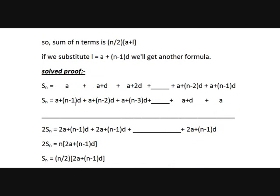Now let's take a solid proof. Let Sn be the sum of first n terms in the arithmetic progression. Sn equals a plus a plus d plus a plus 2d plus and so on until a plus n minus 2 times d plus a plus n minus 1 times d. Now if we write the reverse, it becomes Sn equals a plus n minus 1 times d plus a plus n minus 2 times d plus and so on plus a plus d plus a. You can write the sum in reverse also, because addition has the commutative law.